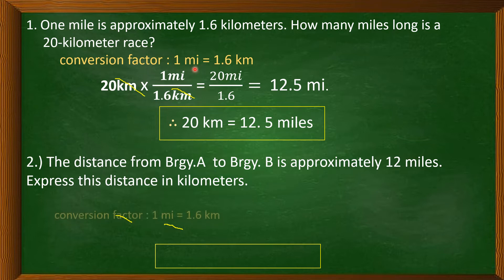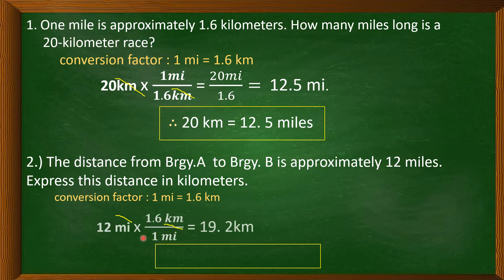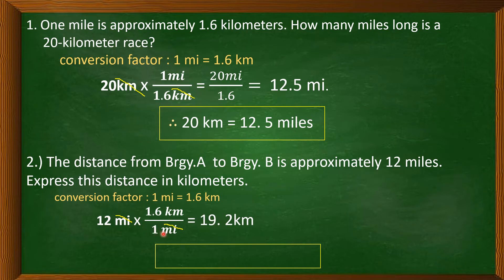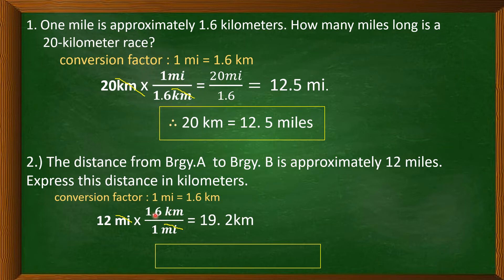We write the given 12 miles times the conversion factor. This time, the numerator is 1.6 kilometers, because the desired unit is kilometers, and the denominator is 1 mile. Always remember: the desired unit goes in the numerator. In Problem 1, the desired unit was miles, so 1 mile was in the numerator. In Problem 2, the desired unit is kilometers, so 1.6 kilometers is in the numerator.